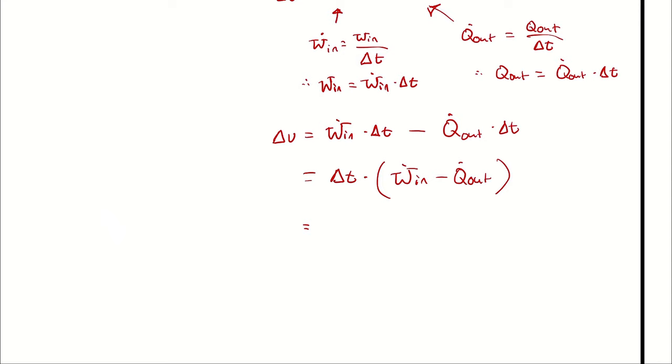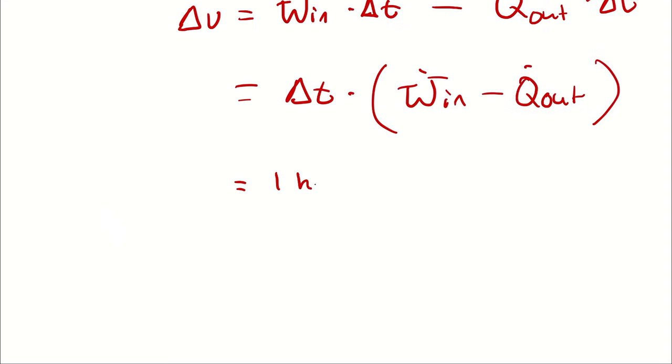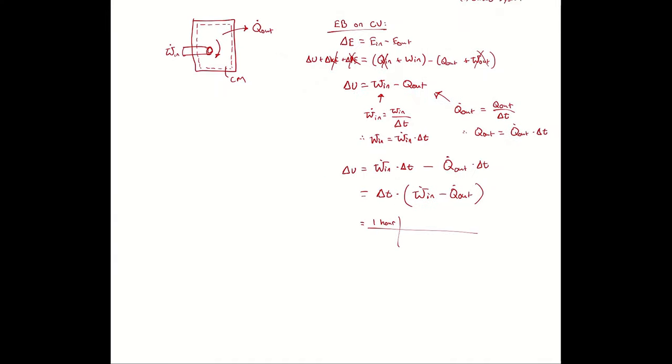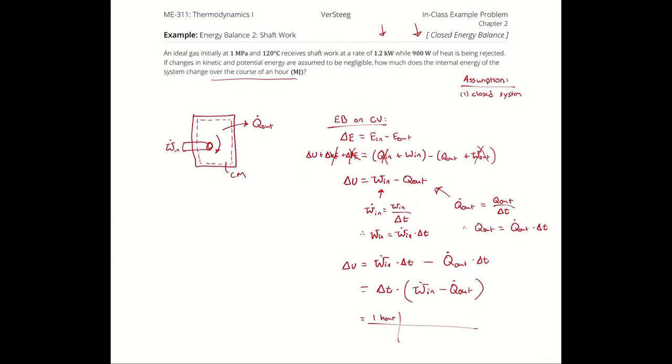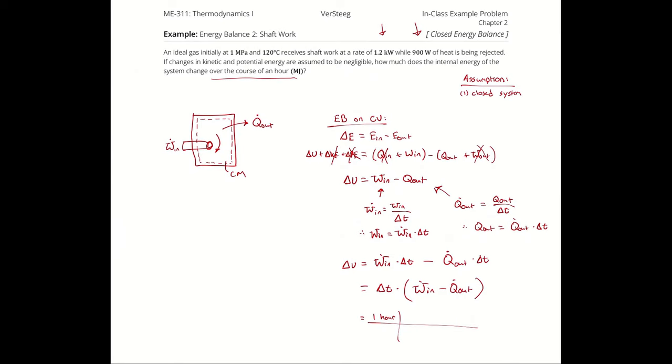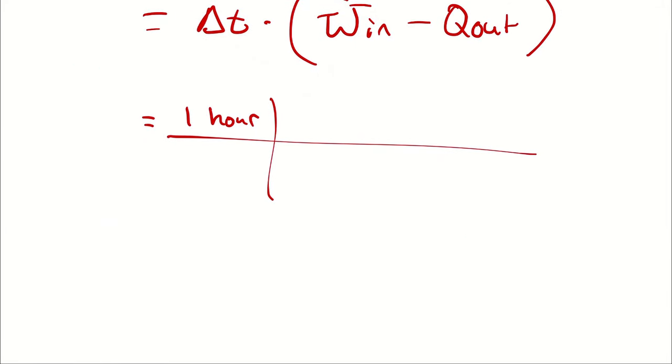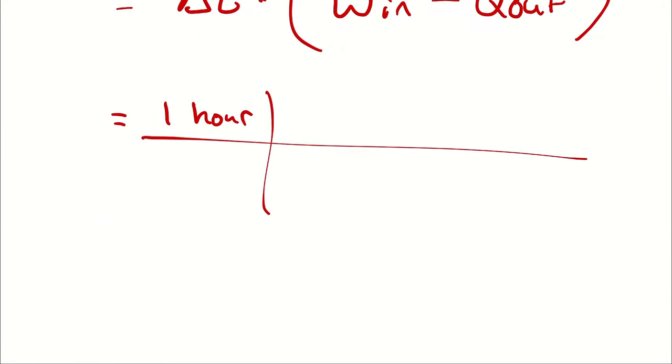My duration was one hour, so I will write one hour. And then I am subtracting the power input minus the rate of heat rejected. So I have 1.2 kilowatts minus 900 watts. In order to subtract them, they need to be in the same unit. So I'm going to write that as 1200 watts minus 900 watts. Note that I could also do 1.2 kilowatts minus 0.9 kilowatts. That would be fine as well.